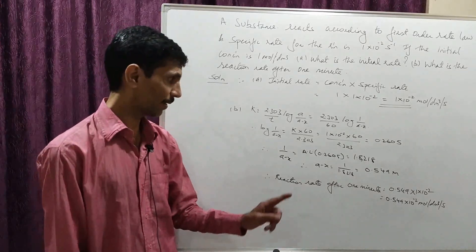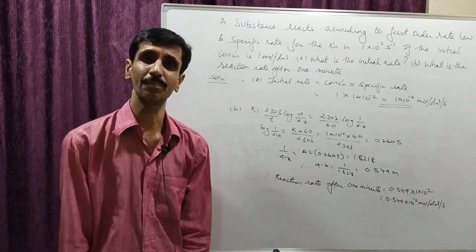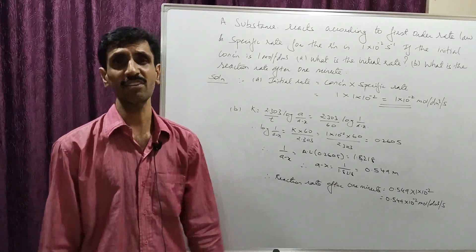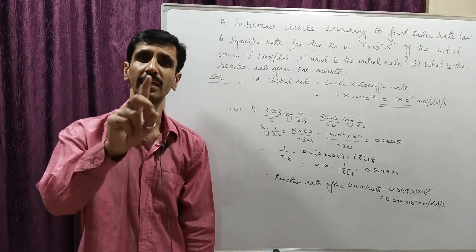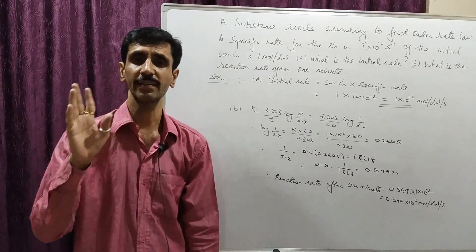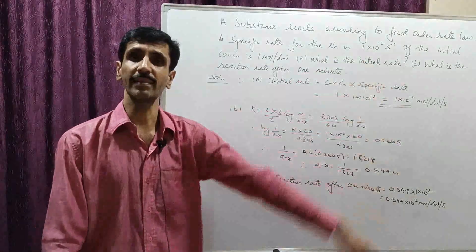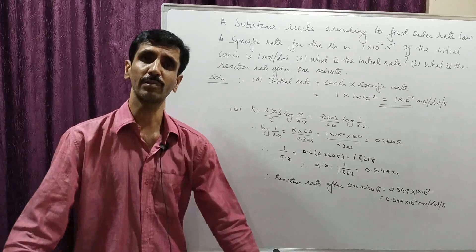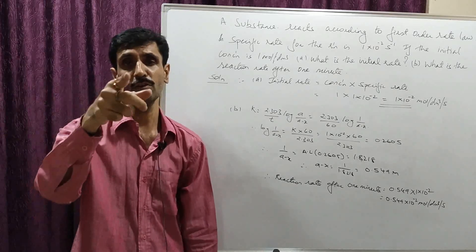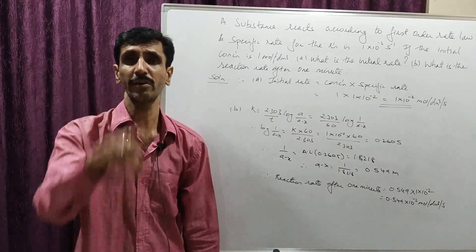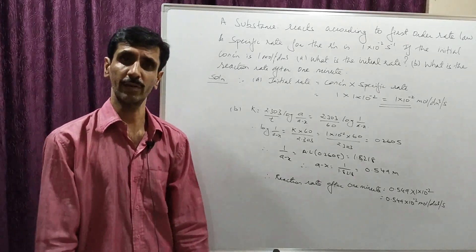Since we need to calculate (a−x), we take the reciprocal of 1.8218, and the answer comes out to be 0.549. This is the remaining concentration with units of moles per dm³ (capital M). For the rate of the reaction, applying the same formula — concentration multiplied by specific rate — we get 0.549 × 1×10⁻² = 0.549×10⁻² moles per dm³ per second, or M·s⁻¹. I hope you have understood this numerical.